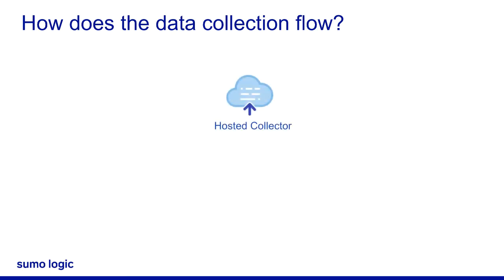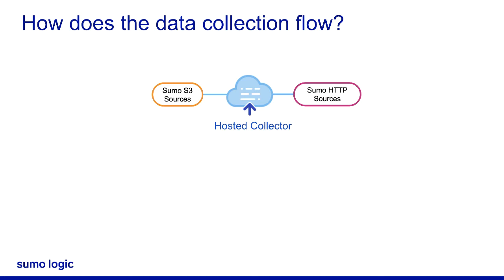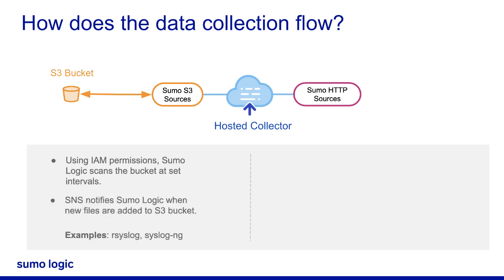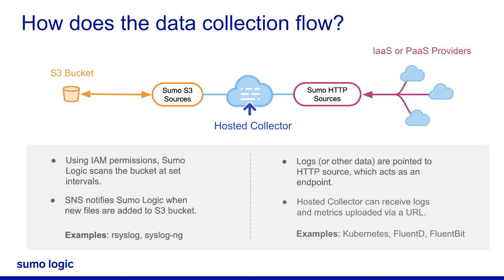Once the hosted collector is configured, let's see how data collection works. For this video we will consider examples of S3 and HTTP. For AWS, Sumo Logic scans the S3 bucket at set intervals using IAM permissions. Amazon Simple Notification Service, or SNS, notifies Sumo Logic immediately when new files are added to the S3 bucket.